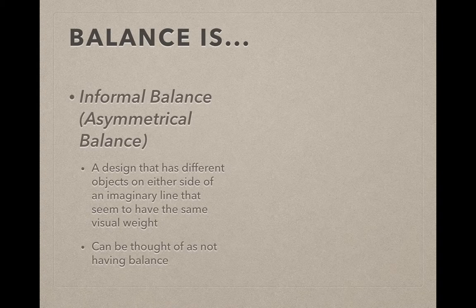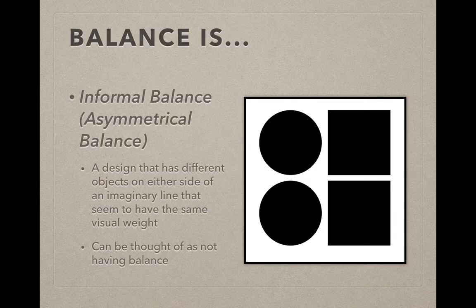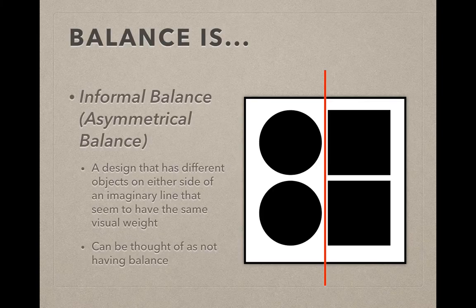An easy way to remember informal balance is that it looks like it doesn't have balance. So, in this example, I have circles on one side, I have squares on the other. So, they're unbalanced to each other.